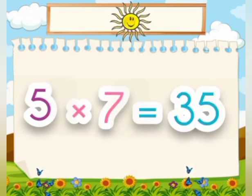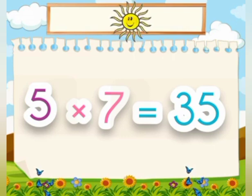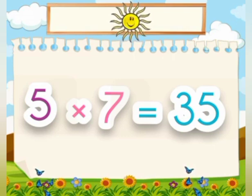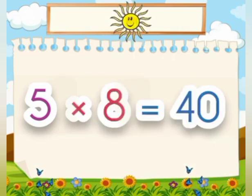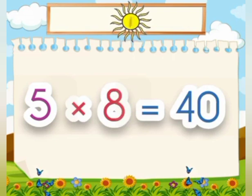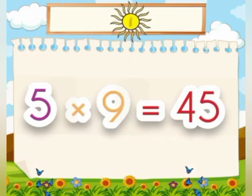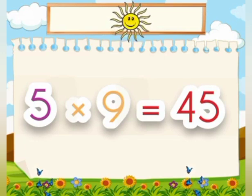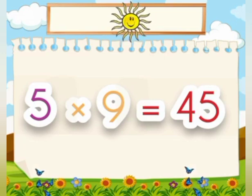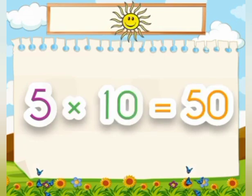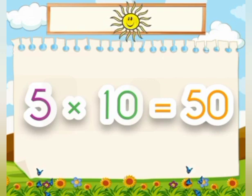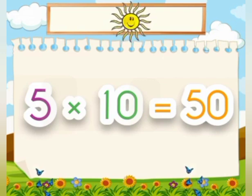7 times 5 is 35. 8 times 5 is 40. 9 times 5 is 45. 10 times 5 is 50.